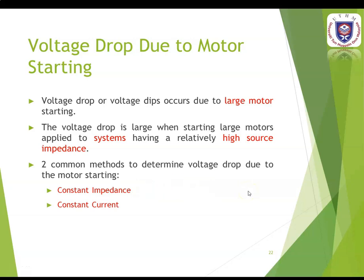Voltage drop also happens due to motor starting. Voltage drop or voltage dips occurs due to large motor starting. A voltage dip is a short, temporary drop in voltage magnitude. The voltage drop is large when starting large motors applied to systems having a relatively high source impedance. There are two common methods to determine the voltage drop due to motor starting: the constant impedance and the constant current.